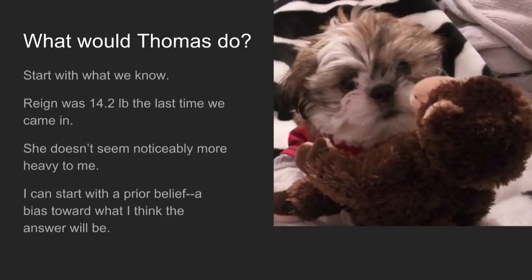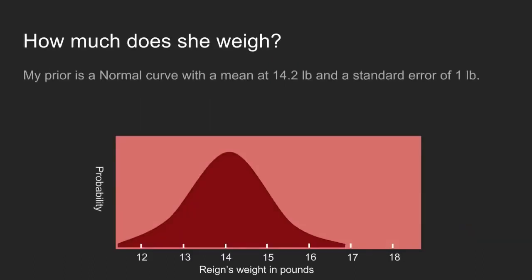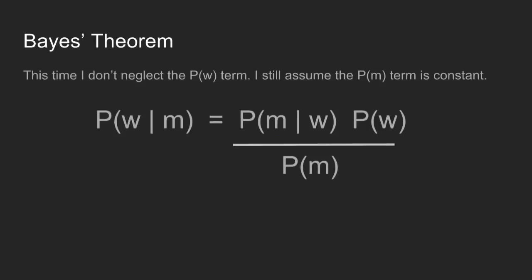Some background information: Rain was 14.2 pounds the last time we went to the vet, and she doesn't seem noticeably more heavy to me. I'm going to assume that she's within about a pound of where she was before. So I take that prior — a normal distribution centered on 14.2 pounds. Most of that bulk is within plus or minus a pound, and it extends a little further out. I allow for the possibility that she's gained or lost a lot of weight, but probably she's pretty close. This is what I believe before I even put her on the scale.